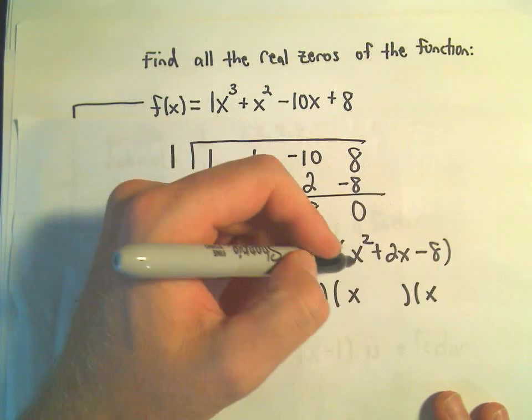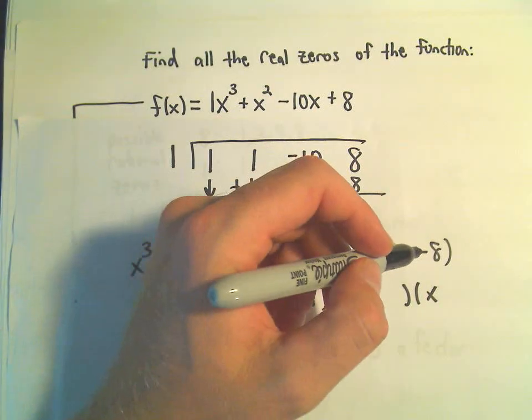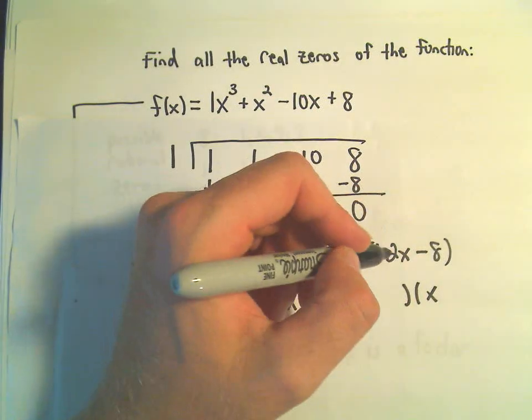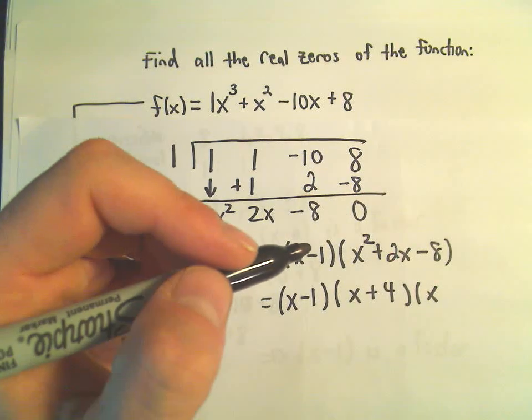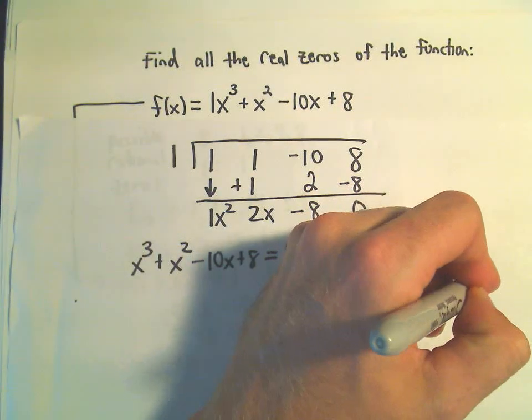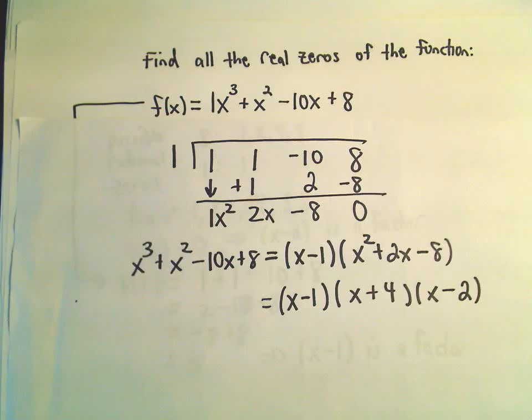So to get the x squared, we'll need x and an x, two numbers that multiply to negative 8 but add up to positive 2. I think we can use how about positive 4 and negative 2.